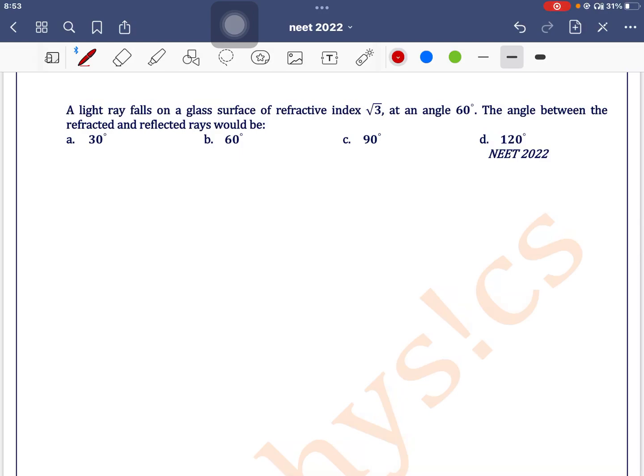A light ray falls on a glass surface of refractive index √3 at an angle of 60 degrees. So the angle of incidence i equals 60 degrees.